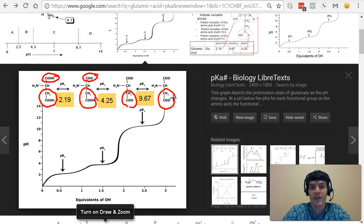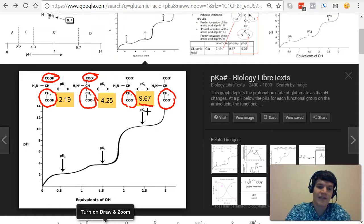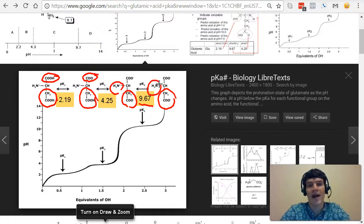The same thing is observed with the amino group. Below its pKa value of 9.67, it's going to be protonated. Above it, it's going to be deprotonated. And this is a really important pattern to know. You're not going to want to memorize every single pKa value for all the amino acids. And that's something that I teach in my amino acids mastery course.